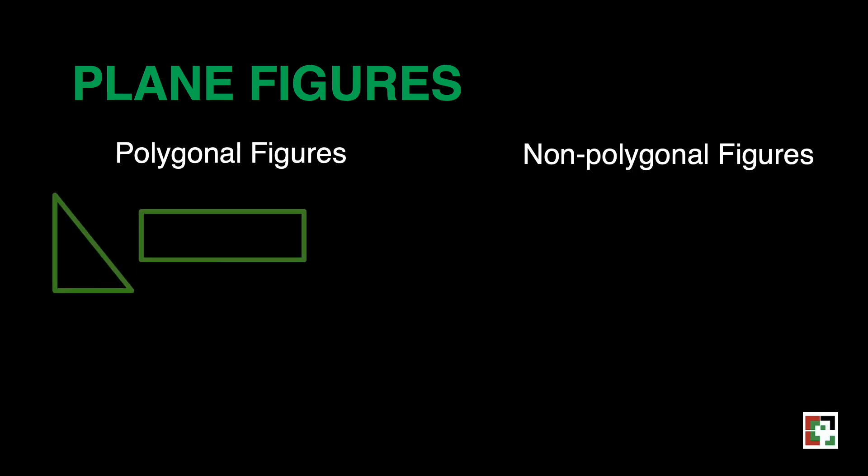Closed figures also have categories. These are polygonal figures and non-polygonal figures. Polygonal plane figures are closed figures formed by line segments. A polygon has at least three sides. Examples of polygons are triangle, quadrilateral, pentagon, and all the n-sided polygon.